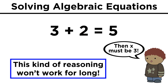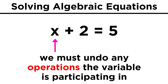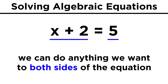But this kind of reasoning won't work with trickier equations, so we have to learn a more rigorous approach to solve for a variable. In order to solve for a variable, we have to look at any operations that variable is participating in, and systematically undo each of those operations by doing something to both sides of the equation.